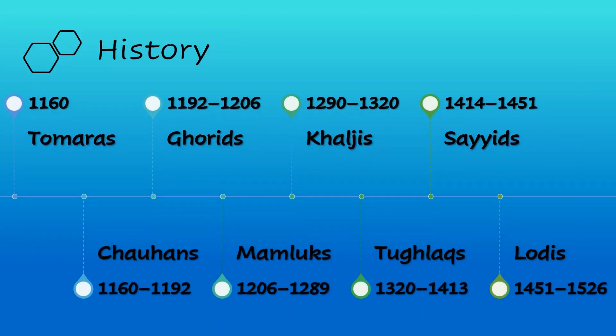Here comes the history of Delhi. The Tumaras were the first to rule in Delhi in 1160. After the Tumaras came the Chauhans, who ruled from 1160 till 1192. After the Chauhans came the Gorids, who ruled from 1192 till 1206. After the Gorids came the Mamluks, who ruled from 1206 till 1289. Then came the Khaljis, who ruled from 1290 till 1320. Then came the Tughlaks, who ruled from 1320 till 1430. Then came the Saids, who ruled from 1414 till 1451. Then came the Lodhis, who ruled from 1451 till 1526.